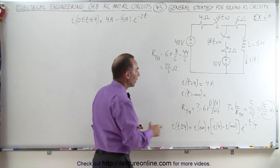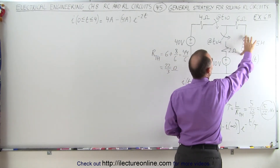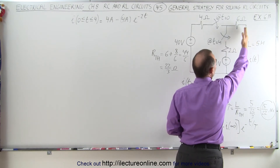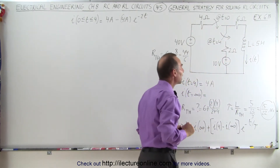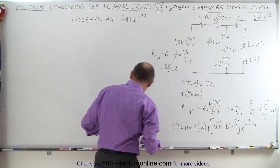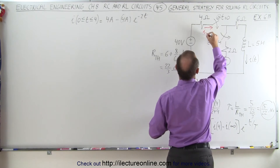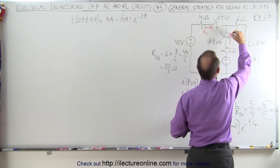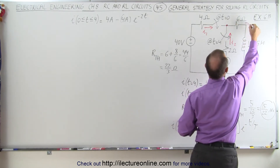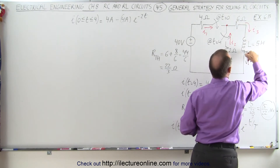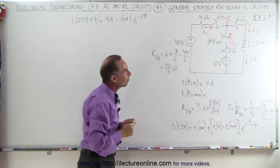Now we need to find the current when a large time has passed — in other words, when the inductor no longer offers any resistance to the change in current because the current is no longer changing. The inductor will then be a short, and we need to figure out what the current will be through it. We'll call the current going into the first branch I1, the current coming up the second branch I2, the current moving away from the junction I3 — which is the current through the inductor — and the voltage at that junction V.